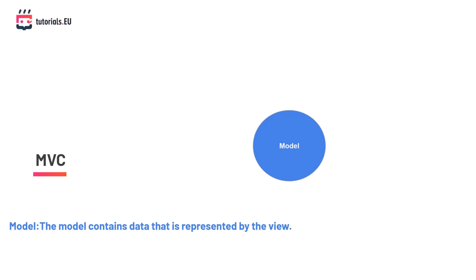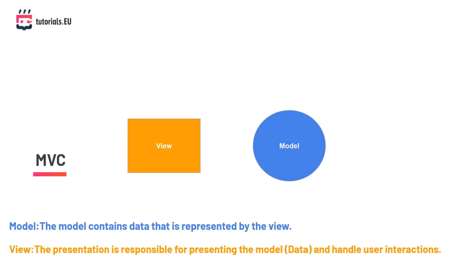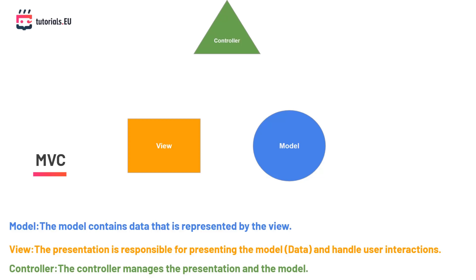The model contains the data represented by the view — these are data classes we create. The view, also known as the representation, is responsible for representing the model/data and handling user interaction. The controller manages both the presentation and the model. Let's take a deeper look at how the MVC pattern works in ASP.NET.